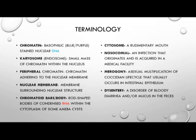Cytosome is a rudimentary mouth. Nosocomial is a type of infection that originates and is acquired in a medical facility. Schizogony is the asexual multiplication of coccidia that usually occurs in the intestinal epithelium. Dysentery is a disorder of bloody diarrhea and/or mucus in the feces.